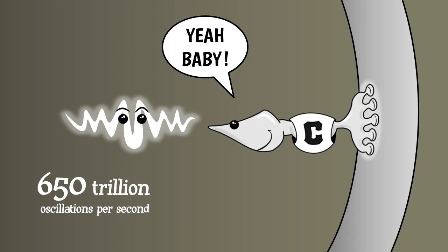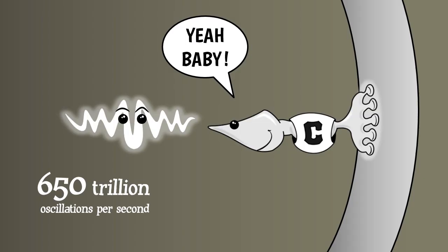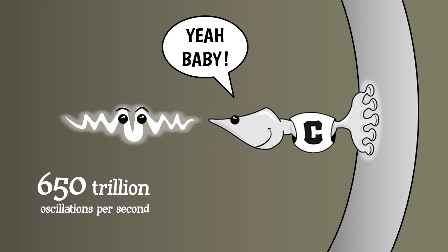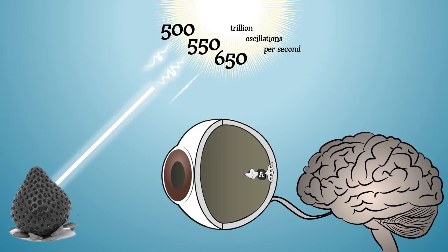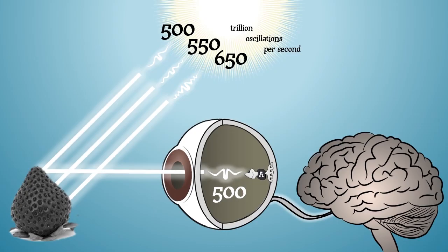We are now ready to understand why a particular object has a particular color. Let's start with a strawberry. It is made of chemical compounds that absorb photons of most frequencies. But it contains no compounds that absorb photons that oscillate about 500 trillion times per second. So these photons are reflected, enter your eyes, and react strongly with the cones in team A. When this happens, the signal that is sent to your brain results in you seeing red, by a complicated process that is not yet fully understood.